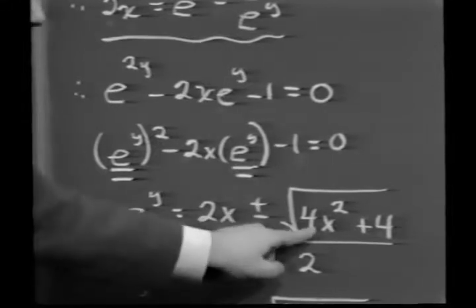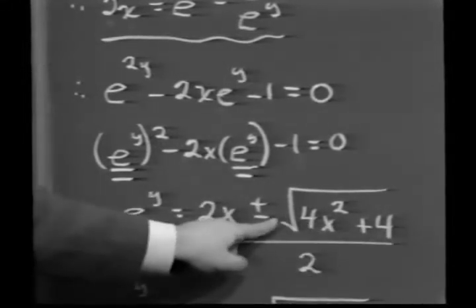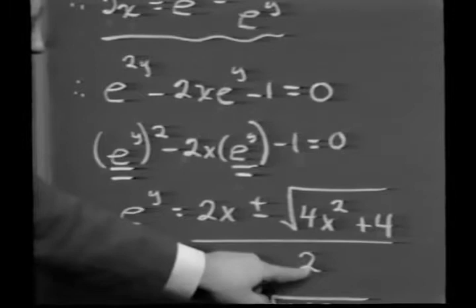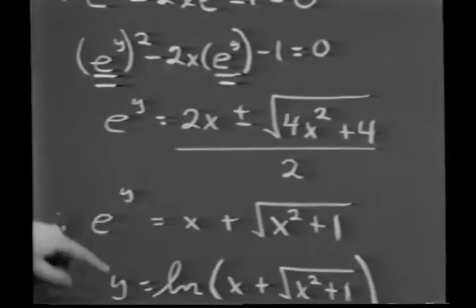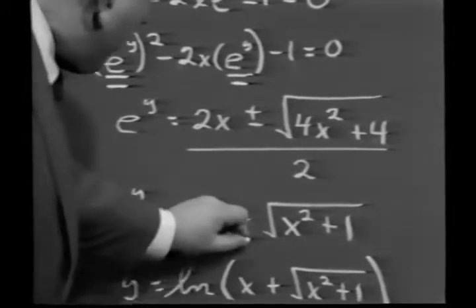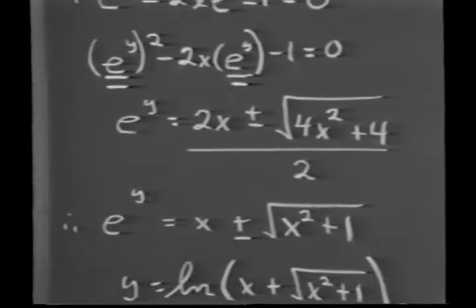And noticing now that the 4 can be factored out here as a 2, and that I can cancel a 2 then from both the numerator and the denominator, I wind up with e to the y is x plus or minus the square root of x squared plus 1.